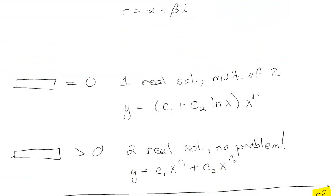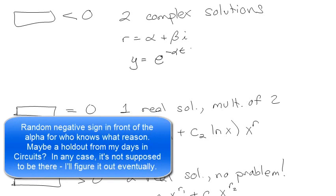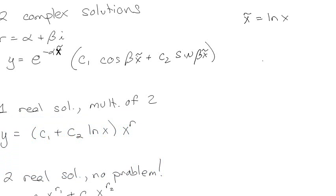Maybe without too much loss of generality, we can think about how we would have done this for the two complex solutions situation. Before when we had two complex solutions, we said that we had e to the alpha t times c1 cosine beta x plus c2 sine beta x, along those lines.